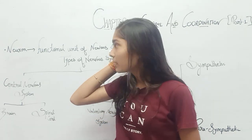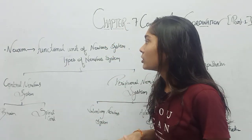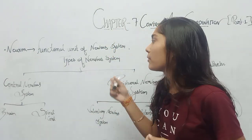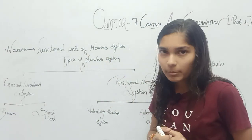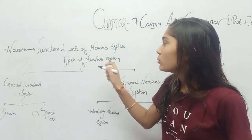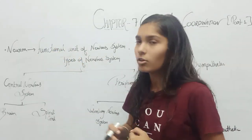What is a Neuron? A Neuron is the functional unit of the nervous system. The nervous system functions through our neurons.